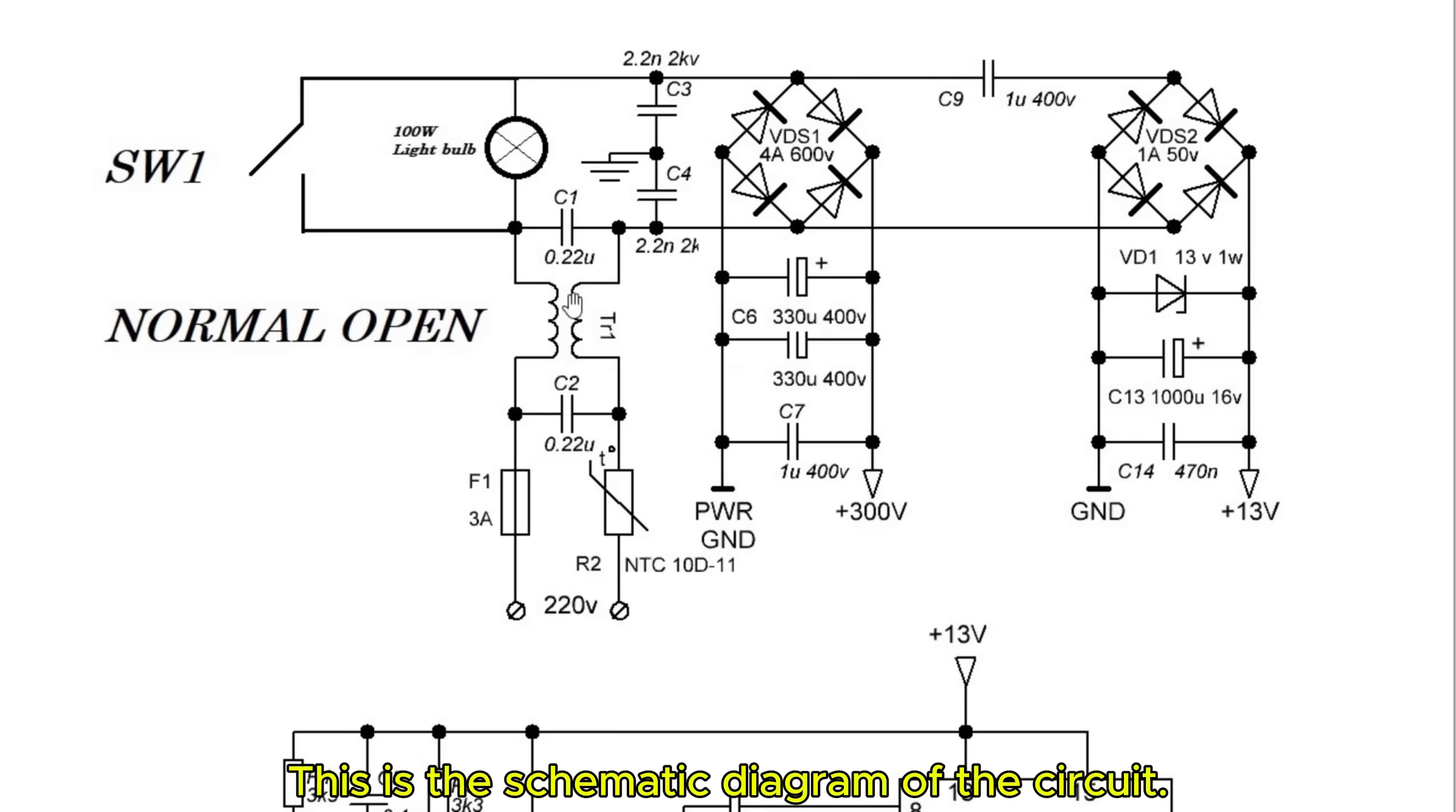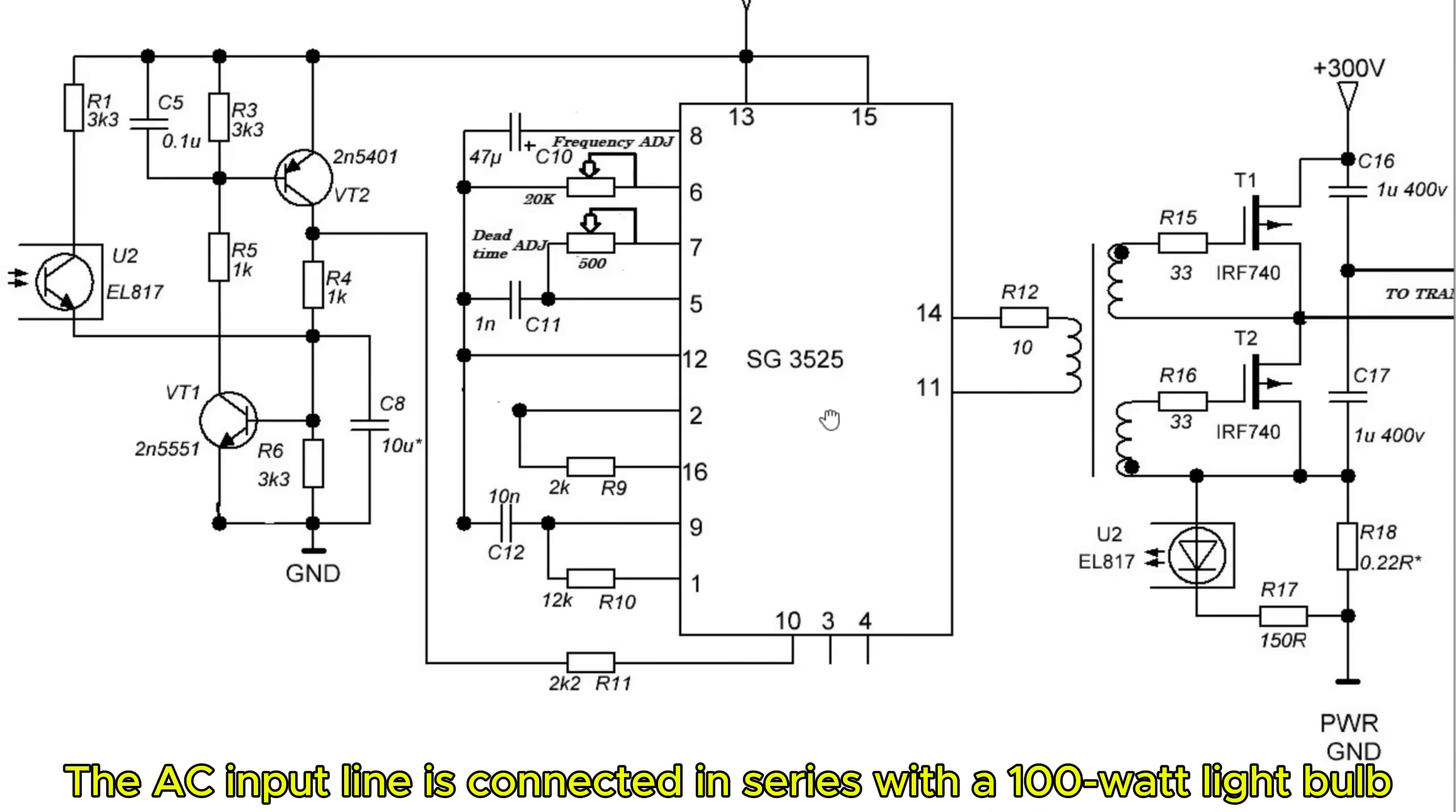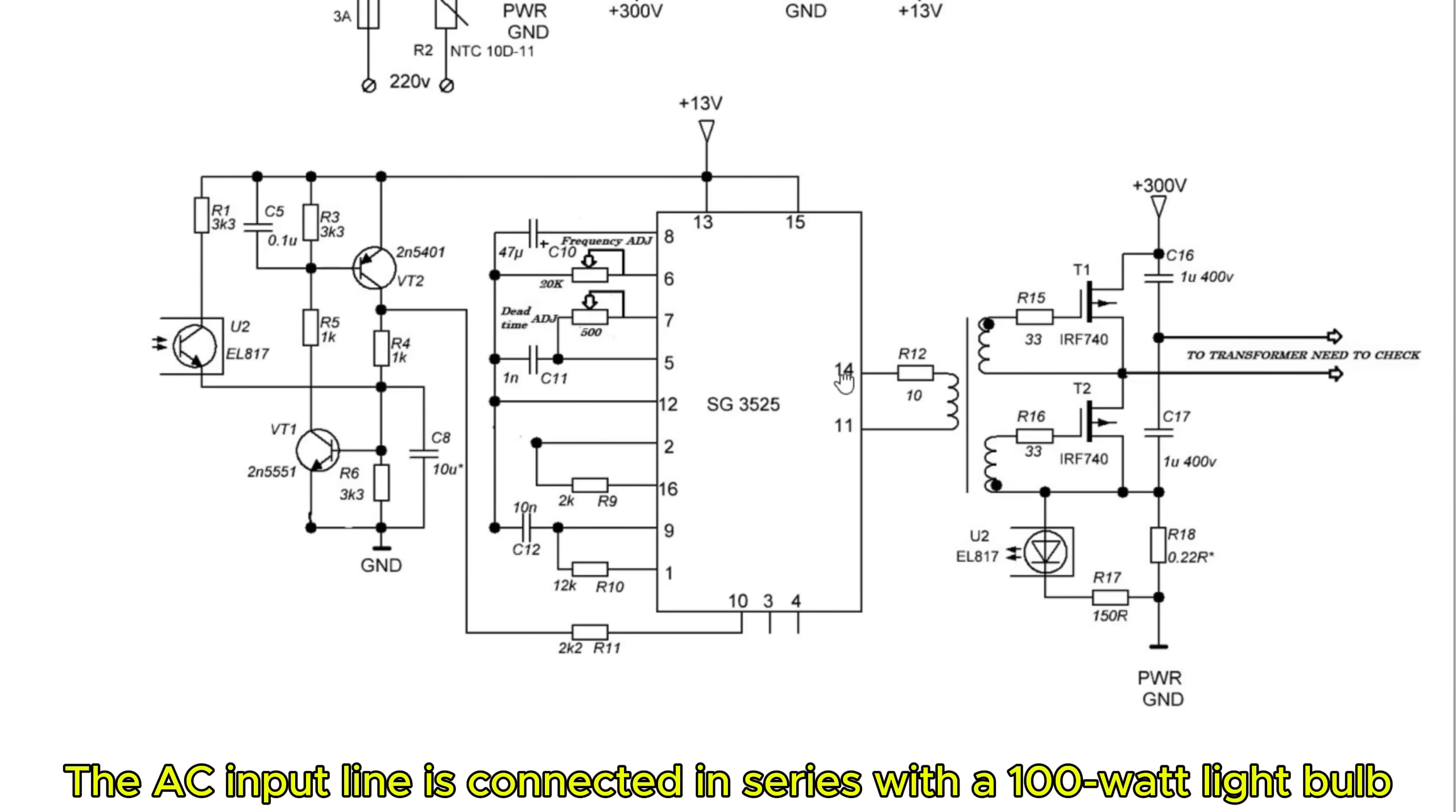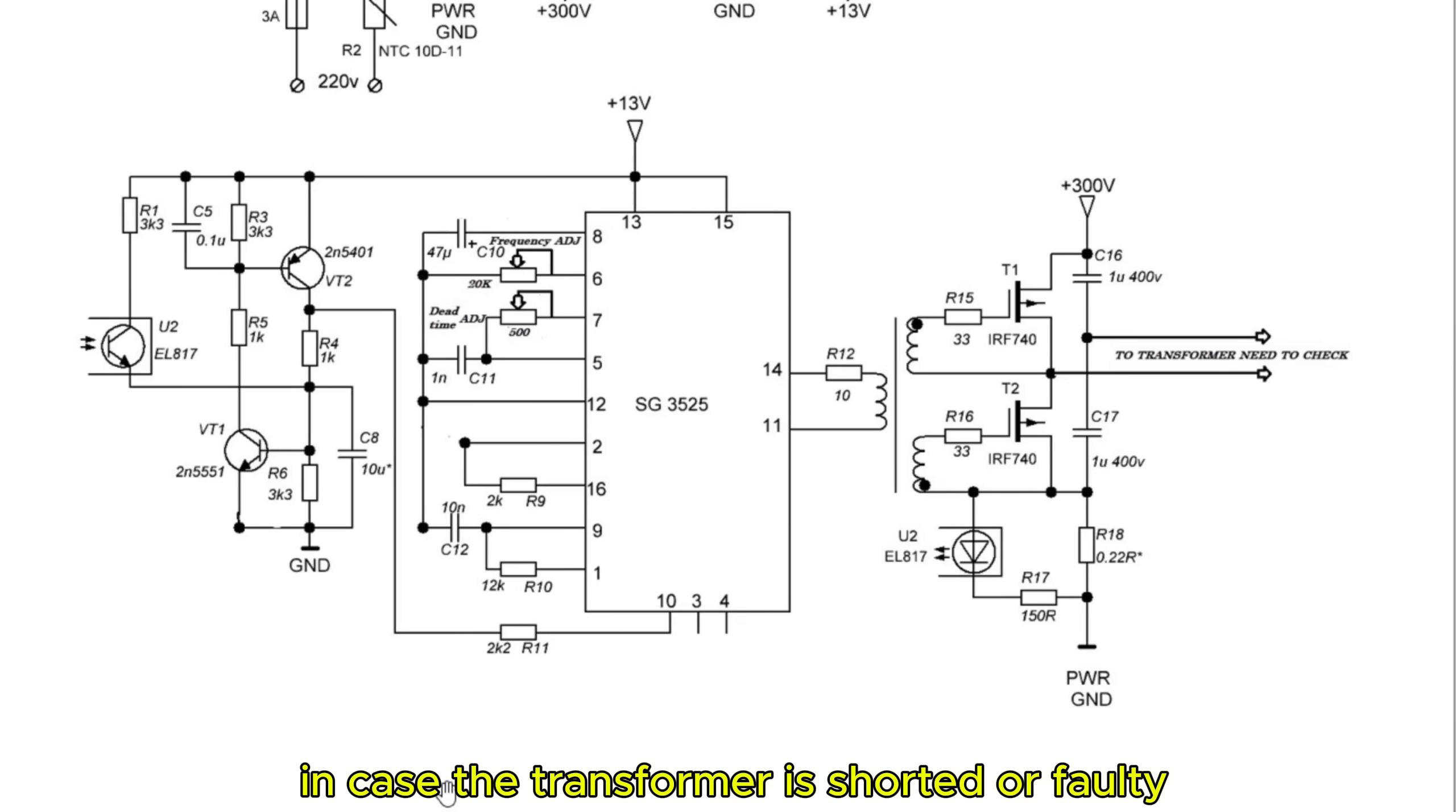This is the schematic diagram of the circuit. It includes a stage that converts 120 volts AC into DC. The AC input line is connected in series with a 100-watt light bulb. In case the transformer is shorted or faulty, the bulb will light up to protect the circuit and prevent component damage.